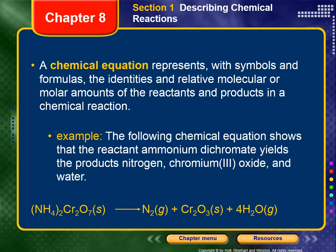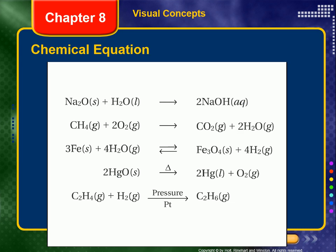A chemical equation represents, with symbols and formulas, the identities and relative molecular or molar amounts of the reactants and products in a chemical reaction. For example, the following chemical equation shows that the reactant ammonium dichromate — that's on the left — yields the products nitrogen, chromium(III) oxide, and water. Chemical equations are a way to describe chemical reactions using symbols.